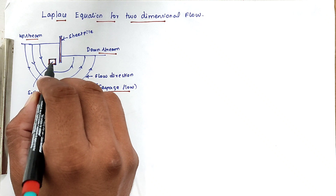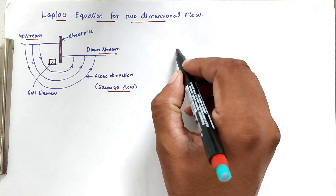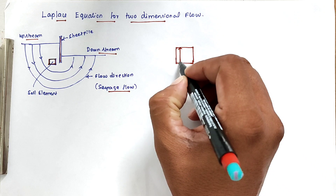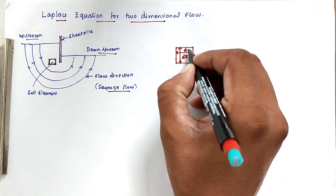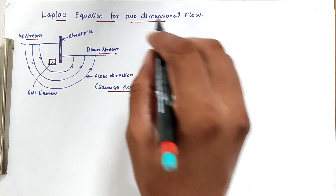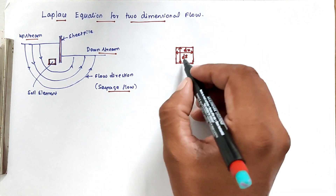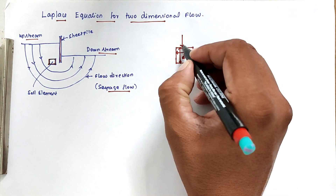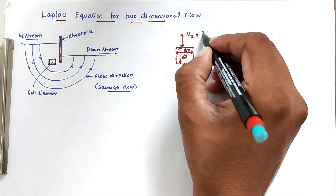First, we consider one soil element and find out the flow velocities for that soil element. We take the soil element having depth dy, width dx, and z as the third dimension. For two-dimensional flow, we consider only dx and dz. The inflow in the vertical direction is Vz, and the outflow is Vz plus (∂Vz/∂z)·dz.